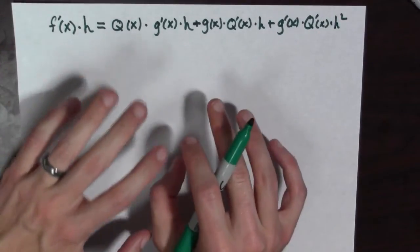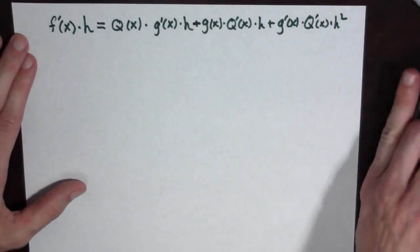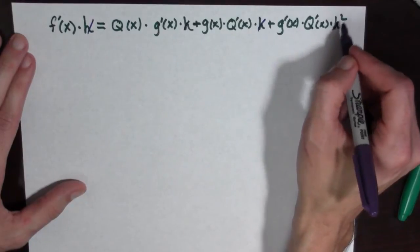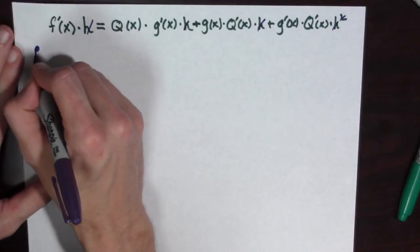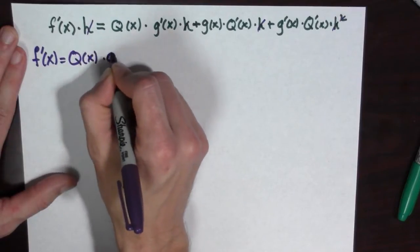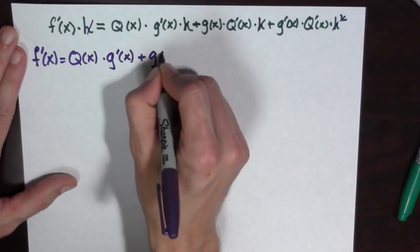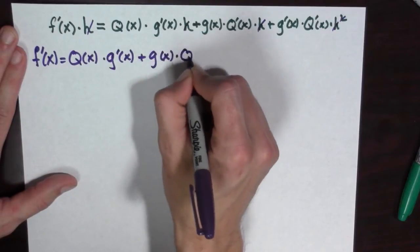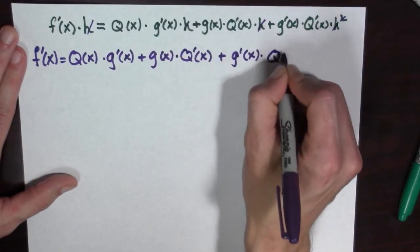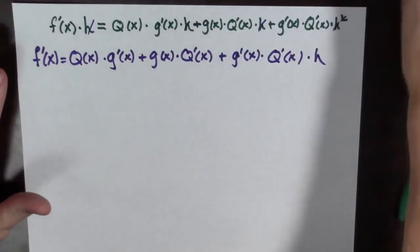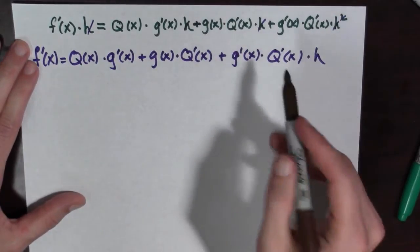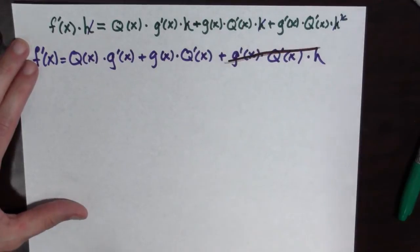Now, every term has an h in it, so let's go ahead and cancel those — cancel, cancel, cancel — except for the last term which has two h's, so we keep one of them. This gives: f prime of x equals q of x times g prime of x, plus g of x times q prime of x, plus g prime of x times q prime of x times h. And since h is really small, this last term can be forgotten about.